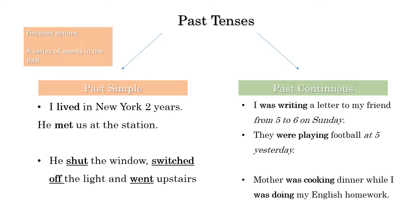What about the past continuous? In the past continuous: I was writing a letter to my friend from 5 to 6 on Saturday. They were playing football at 5 yesterday. Mother was cooking dinner while I was doing my English homework. I'm speaking about what was in progress in the past — something that takes continuous time in the past.